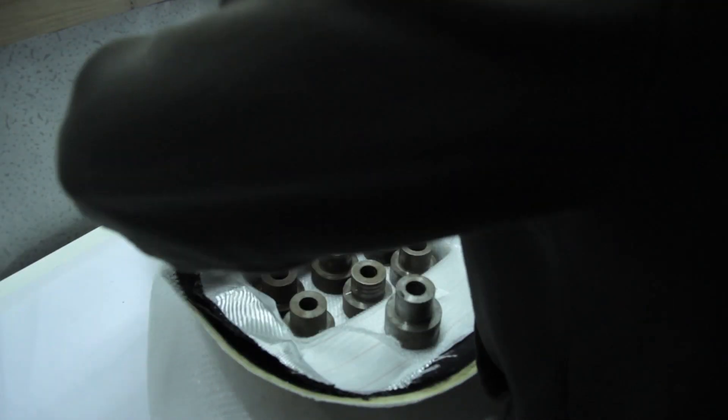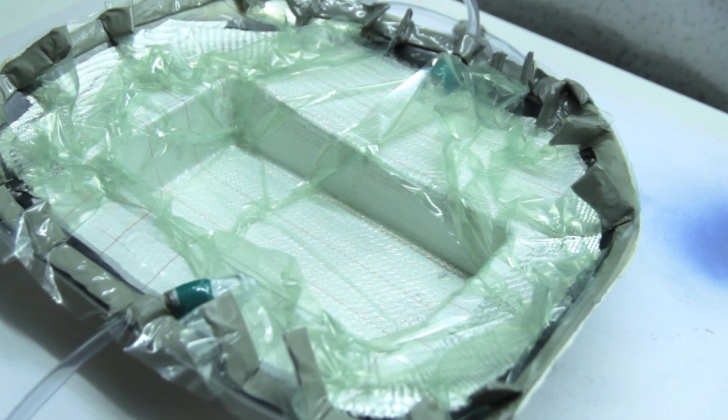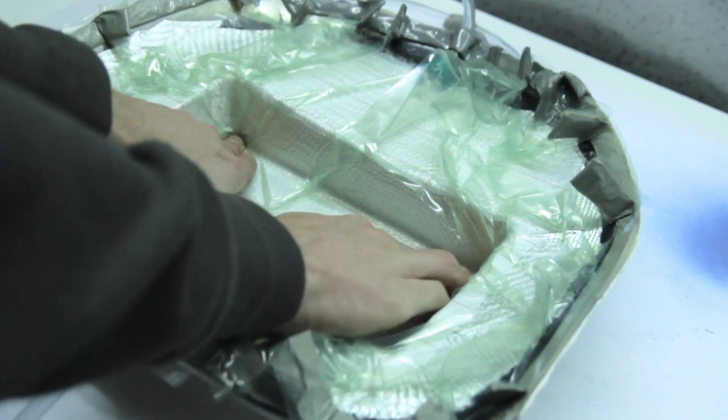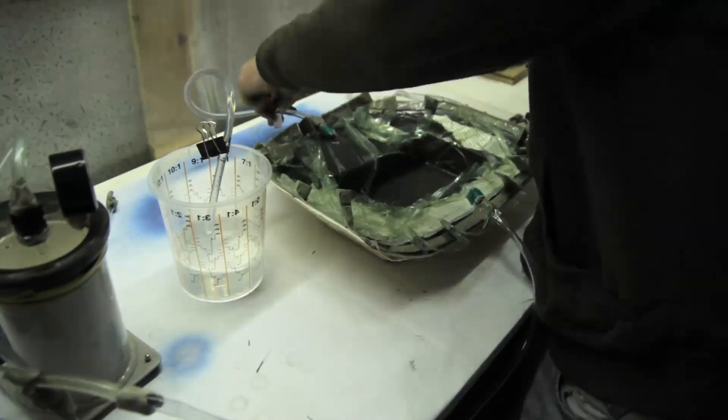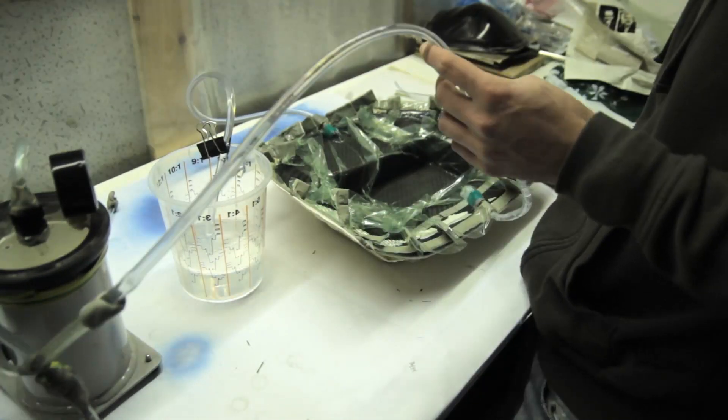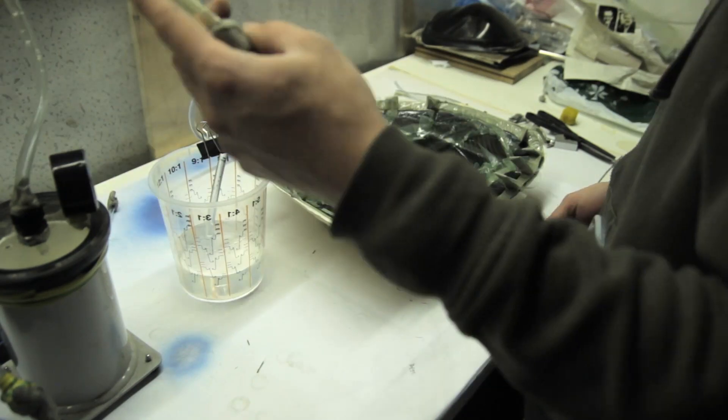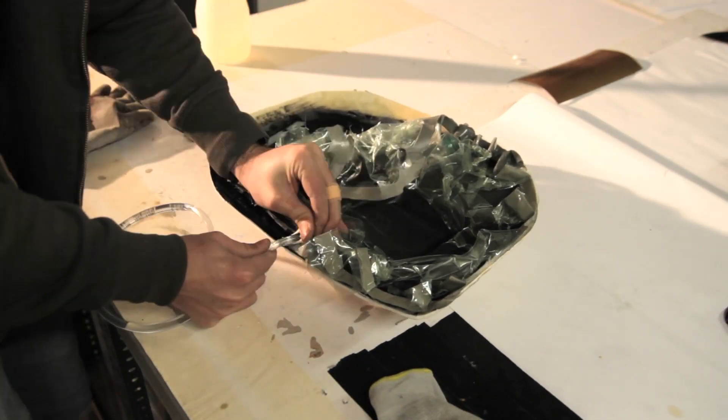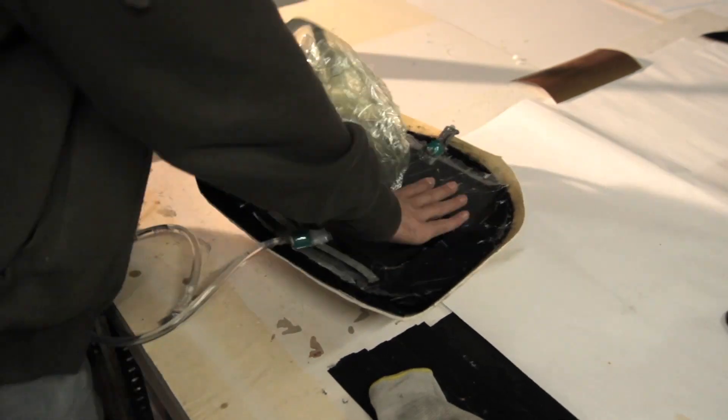What I did here is I've added the peel ply, infusion mesh, now the vacuum bag. Everything is tightly sealed, no bridging, and then the part can be infused. If you're not familiar with what I'm doing here, you should check out a video. I'll just add a link to the vacuum infusion video where everything is explained in a bit more detail.